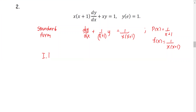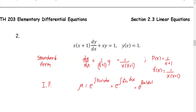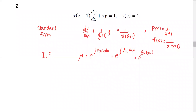The integrating factor mu equals e to the integral of P(x) dx, or e to the integral of 1 over (x+1) dx, which gives us e to the natural log of the absolute value of (x+1). This tells us we get x+1 as mu, the integrating factor.